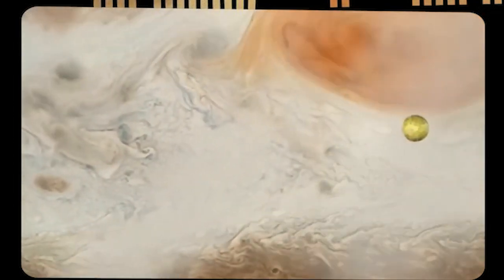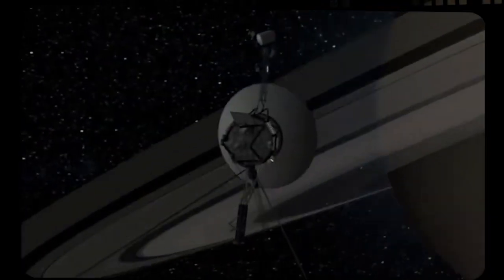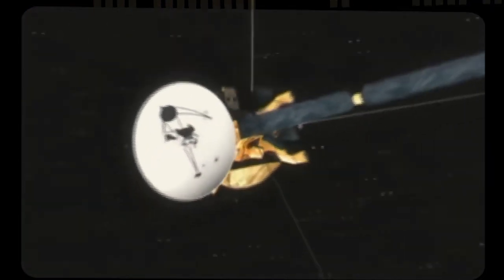The iconic pale blue dot image taken by Voyager 1 from a staggering distance of 3.8 billion miles away still stands as the farthest image ever recorded of our home planet. This awe-inspiring snapshot provides a humbling perspective on the vastness of the cosmos and our place within it.